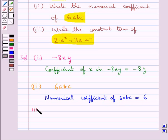The third part of the question is write the constant term of 2x² + 3x + 7. So for this expression the constant term is 7.